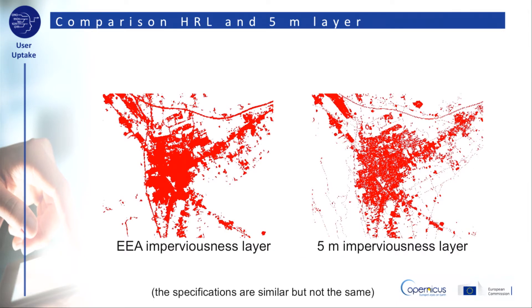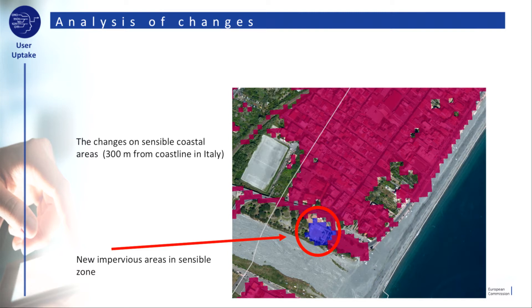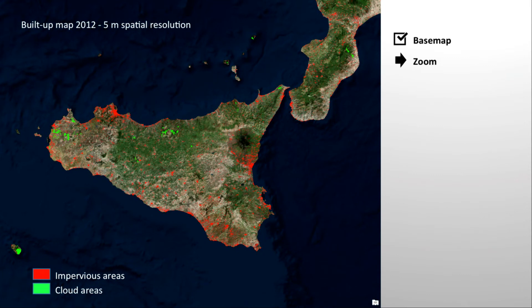Comparing the two versions of the imperviousness layer, it is clear how the higher resolution allows for the identification of minor sealed elements. Comparing the 2012 layer in red and the 2015 layer in blue, it is possible to monitor the changes. A new impervious area detected in the sensible coastal area is shown. In Italy, this is defined as a 300 meter buffer from the coastline.